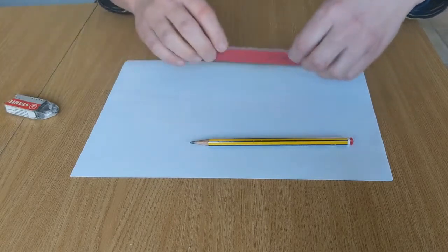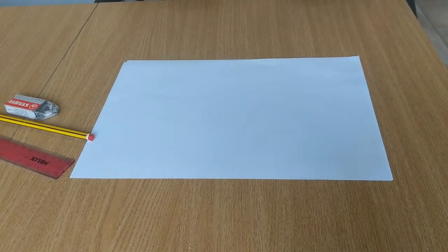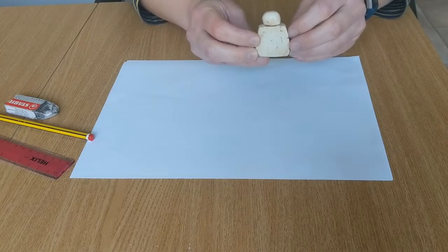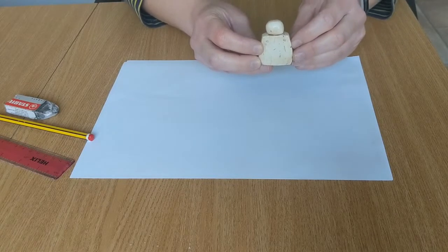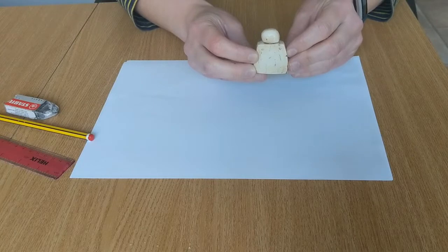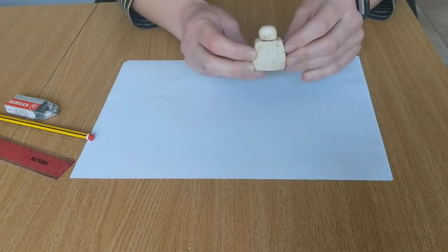You're also going to need to find a nice object to draw. This is something I've got on holiday, it's a replica of a Venus figurine from the Neolithic period in Orkney, and I'm going to have a go at drawing this today.